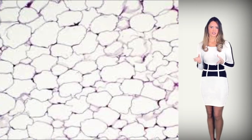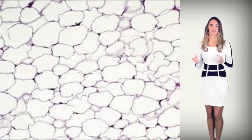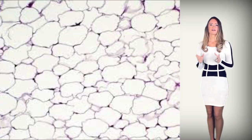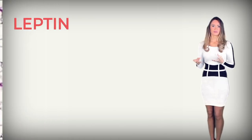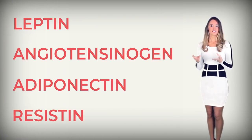White, unilocular adipose tissue. This is the predominant type in adult humans. Its function is storage of energy, insulation, and cushioning of vital organs, as well as secretion of hormones. Some of these hormones are leptin, angiotensinogen, adiponectin, and resistin.